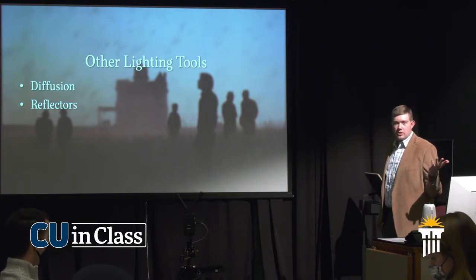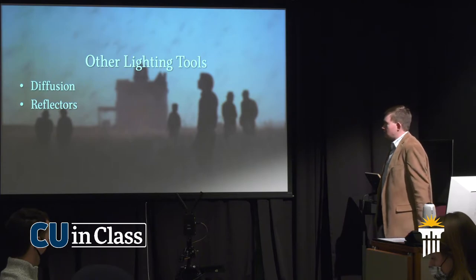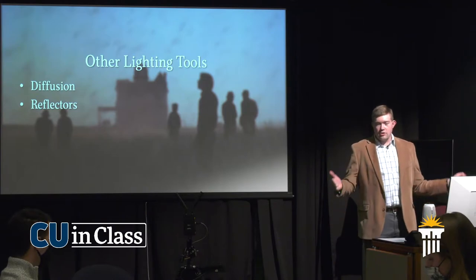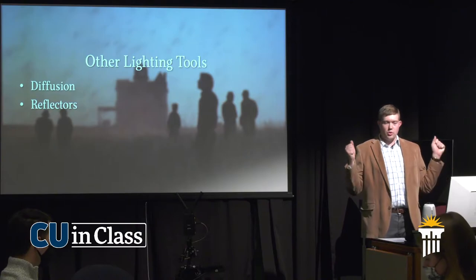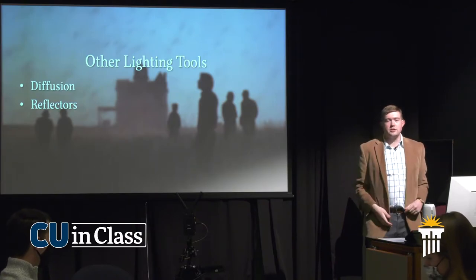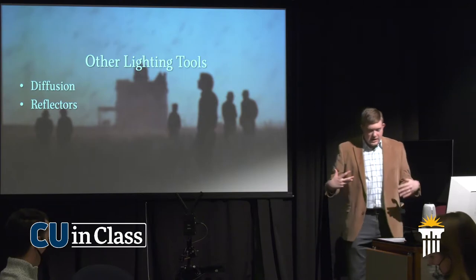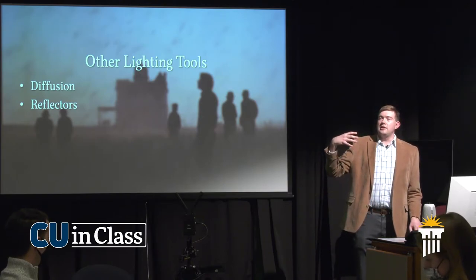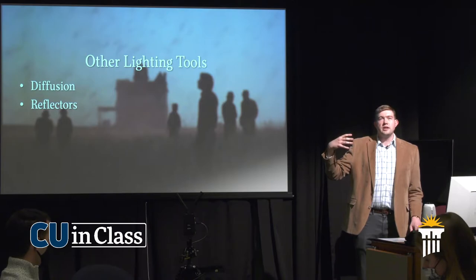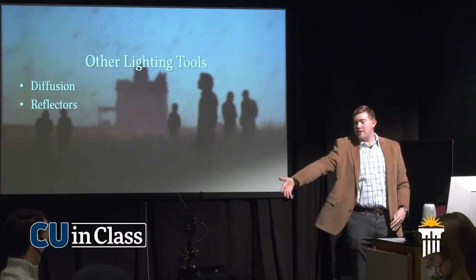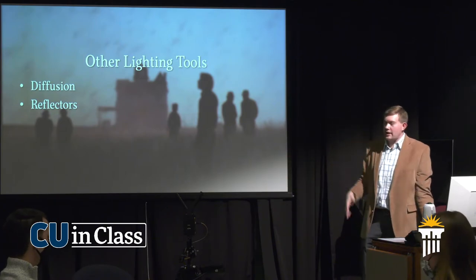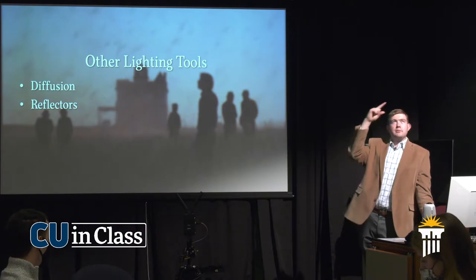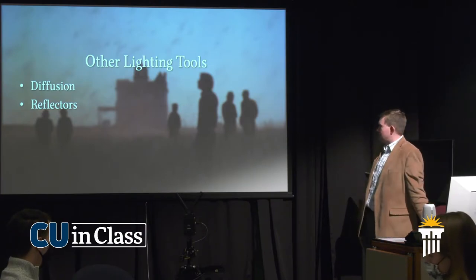Reflectors on a similar note — it's the same thing that either absorbs light that would otherwise make your image more overexposed, or it reflects light back onto the subject. So if I'm standing here and I need more light on this side of me and the sun is coming from right there, then somebody standing with a reflector — this round thing — can point it at me and that adds a little bit of light. Depending on the amount of light and the color of the reflector.